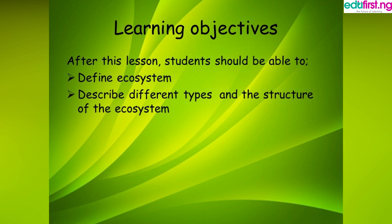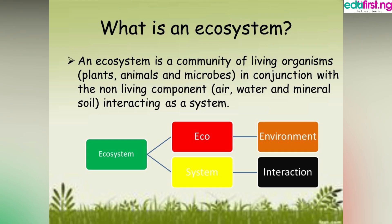What is an ecosystem? An ecosystem is a community of living organisms in conjunction with the non-living components, interacting as a system. The word 'ecosystem' comes from 'eco,' meaning environment, and 'system,' meaning regularly interacting and interdependent components forming a unified whole. So it's about both living and non-living things coming together to make a system.